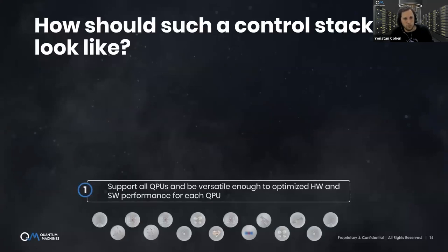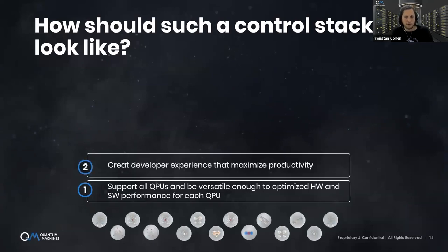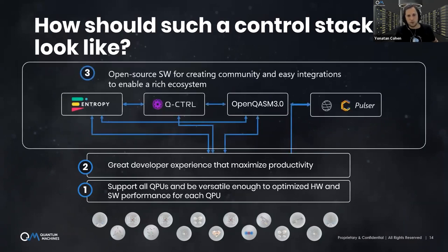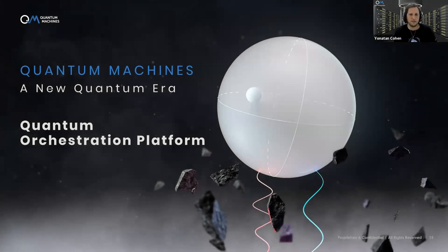What if we could use commonalities between different QPUs to achieve these advantages? What if we could build a platform flexible enough to address the significant uncertainty in quantum computing development? What should such a control stack look like? First, it should support all QPUs and be versatile enough to optimize performance for each. Second, it must provide great developer experience that maximizes productivity. Third, it should include open source software for creating a larger community and enable easy integrations.